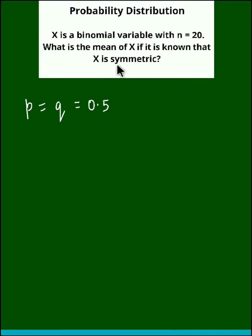So whenever binomial distribution is symmetric, the probability of success is equal to the probability of failure and both are equal to 0.5.